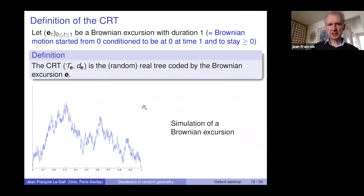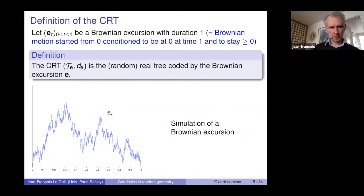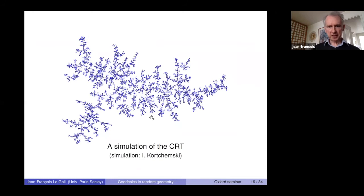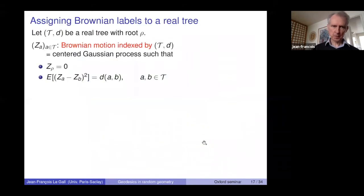Now I take a random coding function: a Brownian excursion of duration one. The CRT may be defined as the random real tree coded by this Brownian excursion. Since I took a random coding function, I get a random object. Here is a simulation of the CRT — it's a complicated tree, but binary in the sense that branching points have multiplicity three. Points are of two types: leaves of multiplicity one, points of multiplicity two, and branching points of multiplicity three.